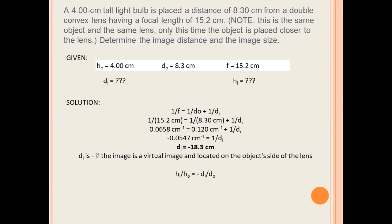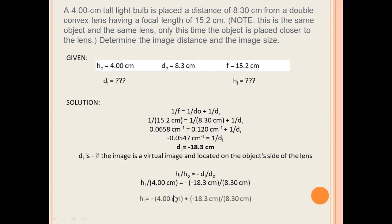Solving for the height of the image HI, we equate both magnification equations: HI over HO equals negative DI over DO. Substituting the values: HI over 4 cm equals negative of negative 18.3 cm all over 8.3 cm. Cross-multiplying HO to the other side gives us HI equals negative 4 cm multiplied by negative 18.3 cm, divided by 8.3 cm.